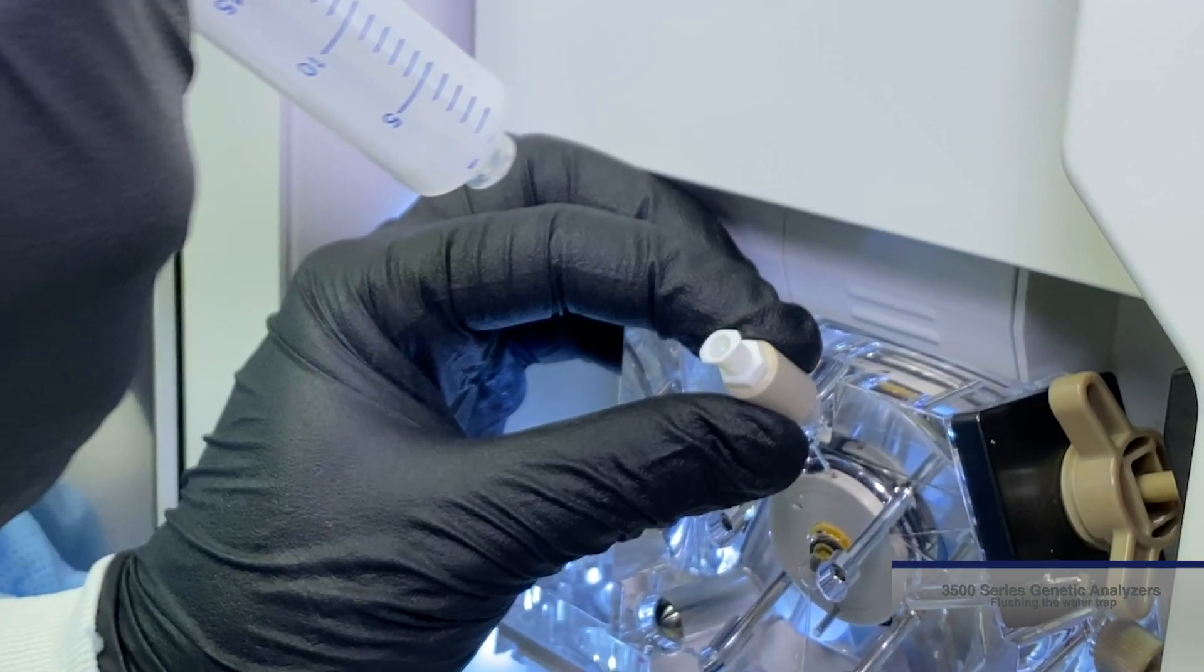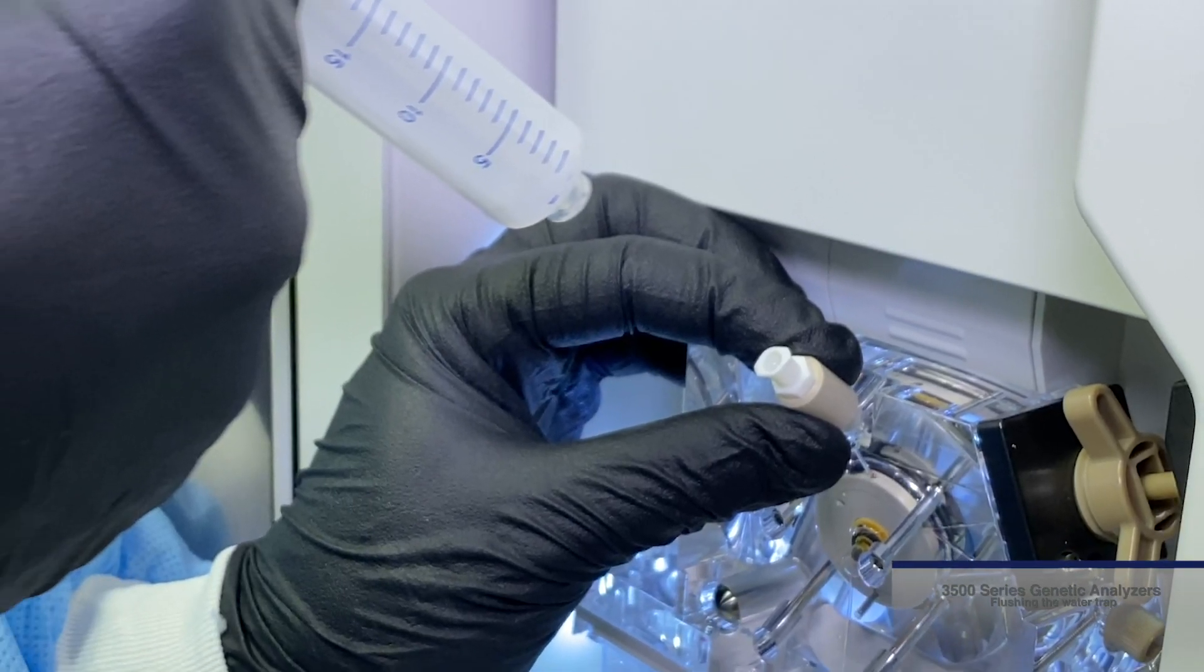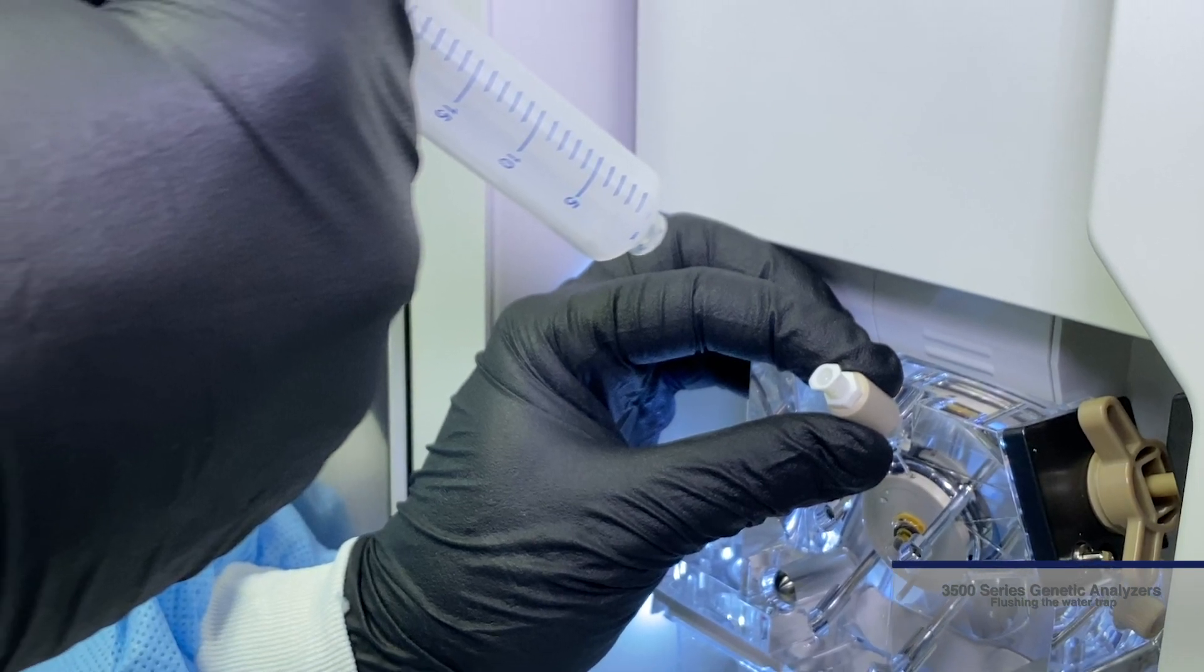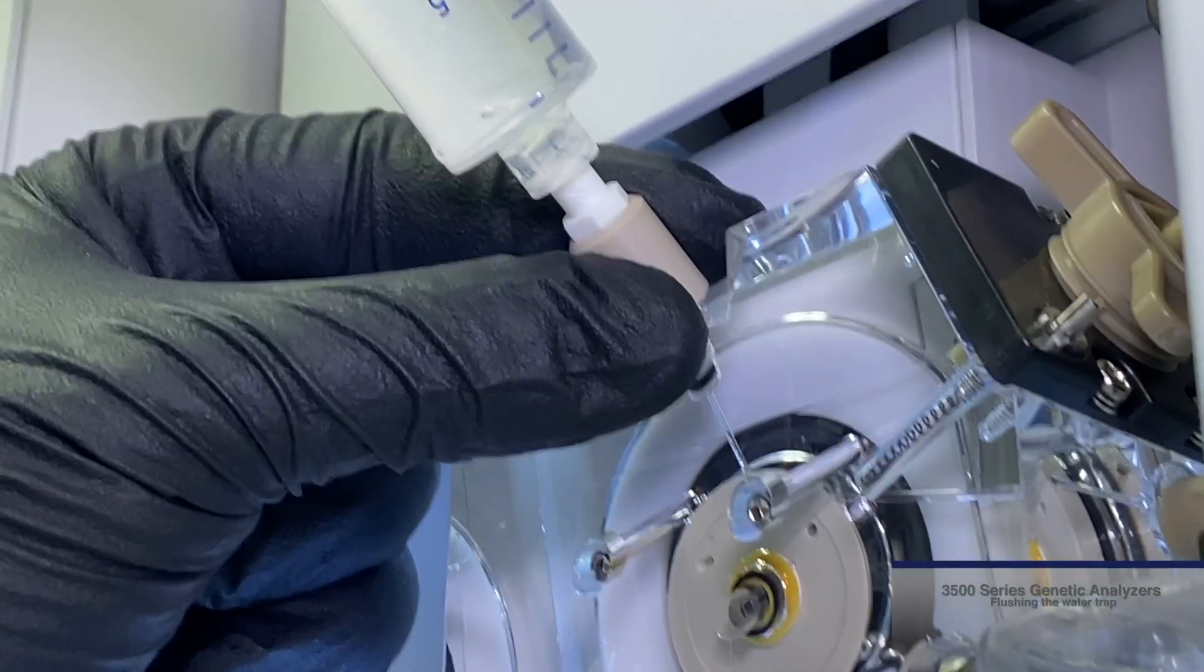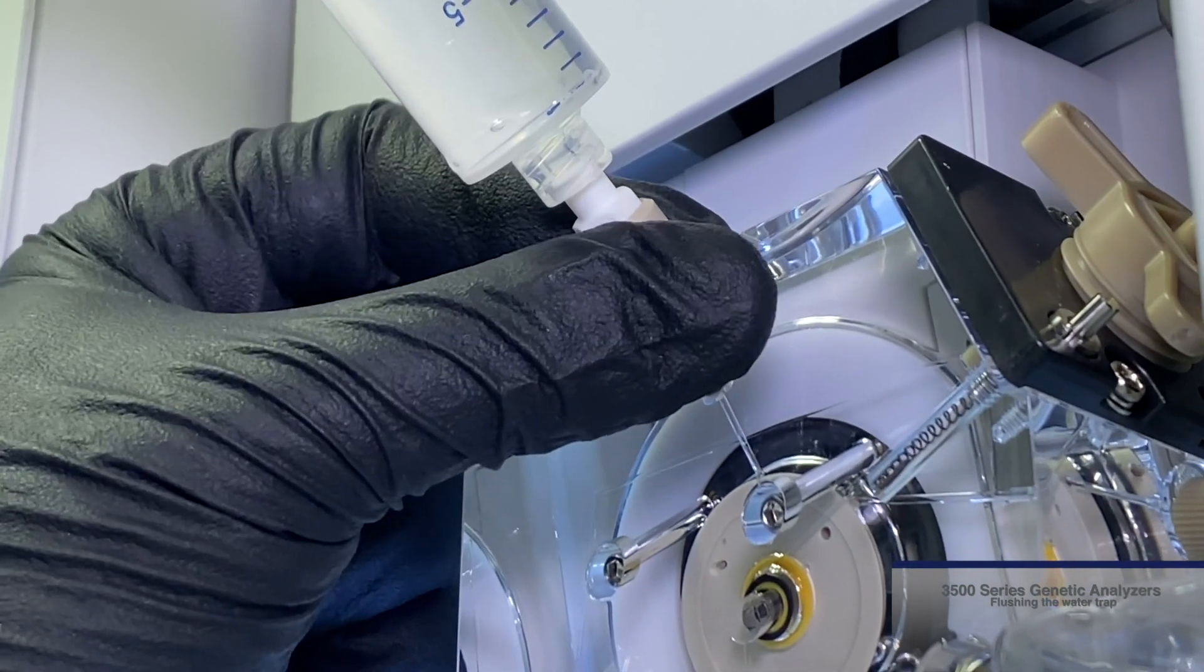Once an adequate volume of water has been run through the water trap, remove the syringe from the lure fitting. Hold the fitting with one hand while turning the syringe counterclockwise with the other hand.